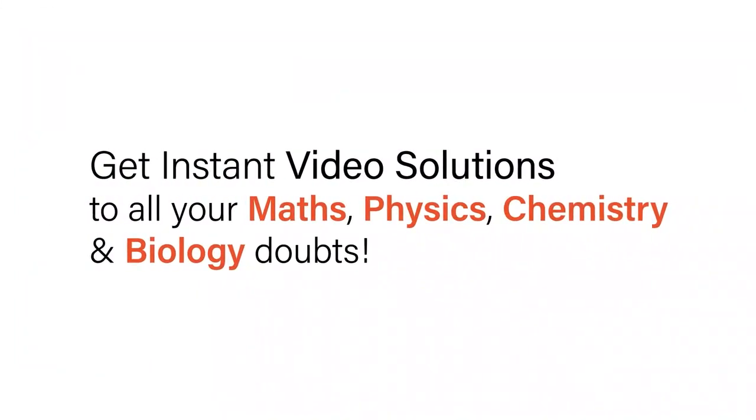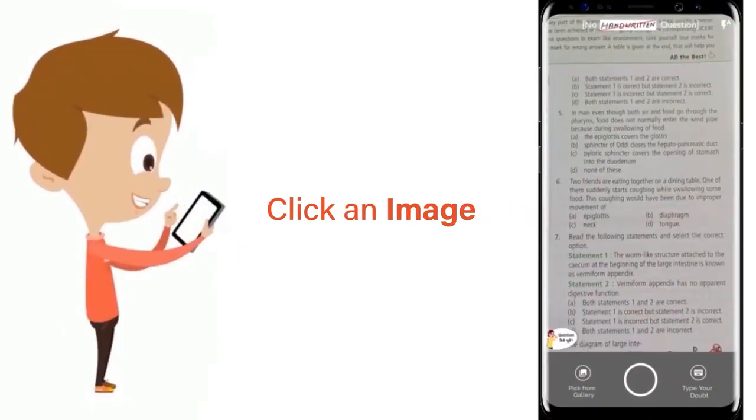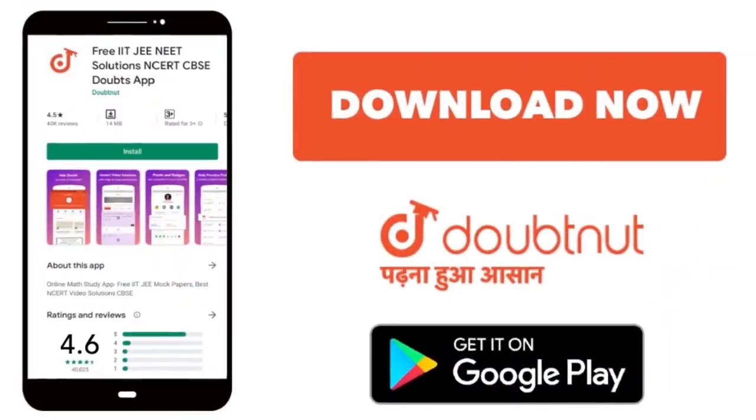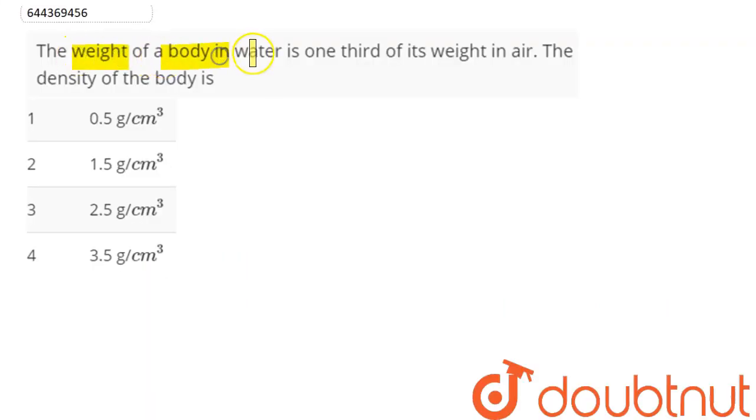With Doubtnet, get instant video solutions to all your math, physics, chemistry, and biology doubts. Just click the image of the question, crop the question, and get instant video solution. Download Doubtnet app today. Question is: weight of a body in water is one third of its weight in air. The density of the body is, so we can say...